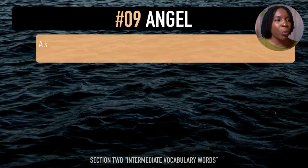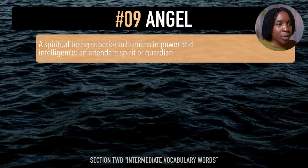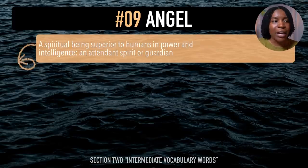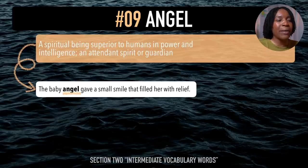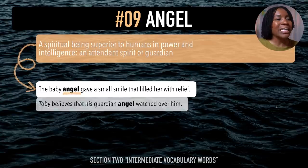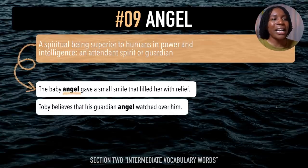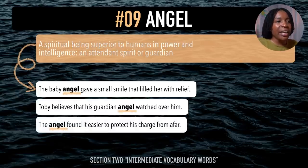The next intermediate vocabulary word is 'angel'. After me — angel. An angel is a spiritual being superior to humans in power and intelligence, or an attendant spirit or guardian. Example sentences: The baby angel gave a small smile that filled her with relief. Toby believes that his guardian angel watched over him. The angel found it easier to protect his charge from afar. Last time — angel.